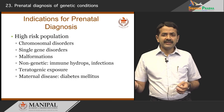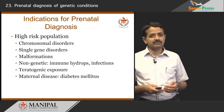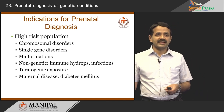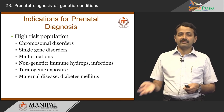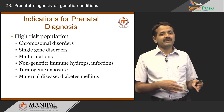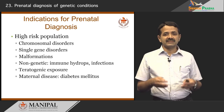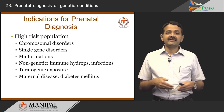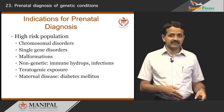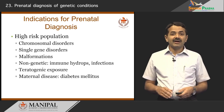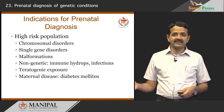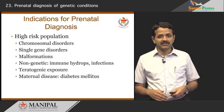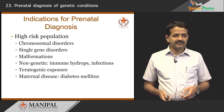High risk also includes intrauterine infections or teratogenic exposure — some pregnant women, without knowing they are pregnant or that certain drugs have adverse effects, take medication and we want to test whether the fetus is affected. It can also include maternal diseases like diabetes mellitus, epilepsy, rheumatoid arthritis, or SLE, where the fetus is at risk of certain conditions. All of these fall under the high risk pregnancy category where the fetus is at higher risk than the general population.